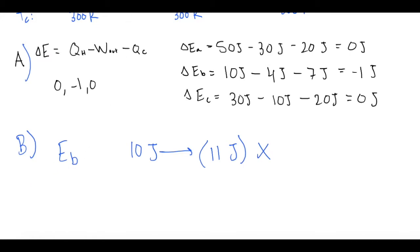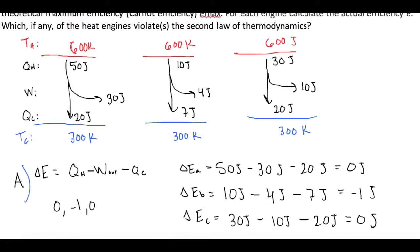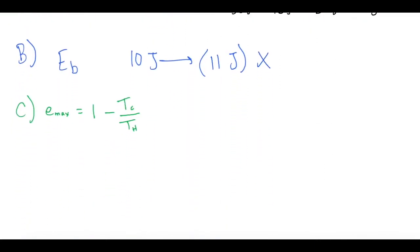Part C. They say calculate the maximum efficiency for all of these engines. So for part C, we'll use the equation Emax is equal to 1 minus Tc over Th. So let's go back up and look at the Tc and Th for all of these. So if you notice, Th is all 600 Kelvin.